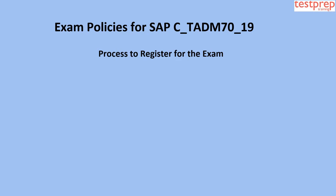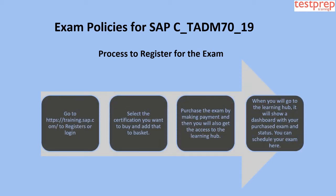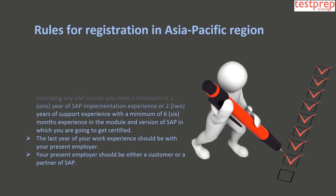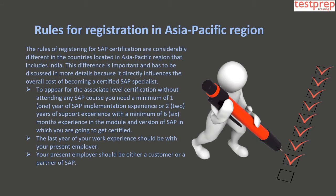Exam Policies — Registration Process: To register for the exam, follow these steps. First, go to the website to register or login. Second, select the certification you want to buy and add it to the basket. Third, purchase the exam by making payment, and you will also get access to the Learning Hub. Fourth, when you go to the Learning Hub, it will show a dashboard with your purchased exam and status, where you can schedule your exam.